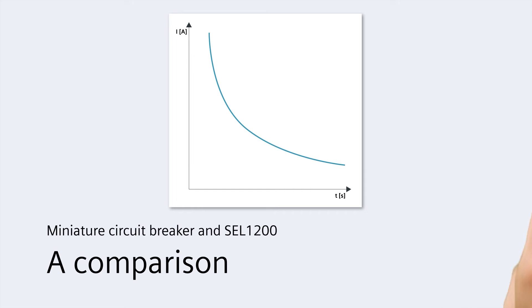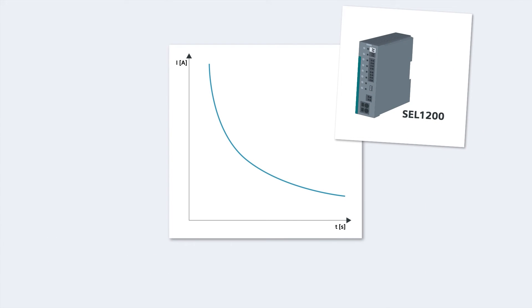Let's take a look at the SEL1200. As you can see, when a fault occurs, the SEL1200 trips much sooner. It also responds to a much lower current, meaning that the other loads are much less affected and the voltage dip is minimized.